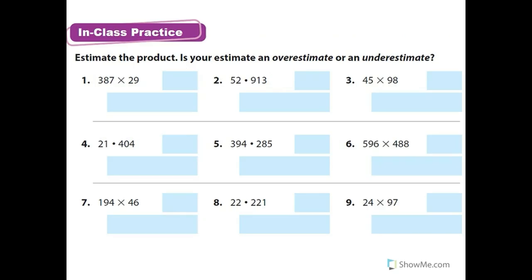Let's do some in-class practice. I'm going to do 1, 2, and 3 with you, and then 4, 5, and 6 I want you to do on your own. I'm going to round 387 to 400 and round 29 up to 30, because I want numbers that are easy to work with when I estimate. So 4 times 3 is 12, with 3 zeros: 12,000. And it is an overestimate.